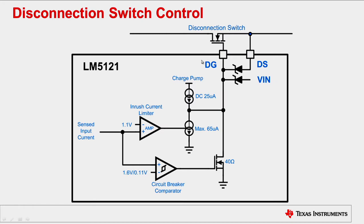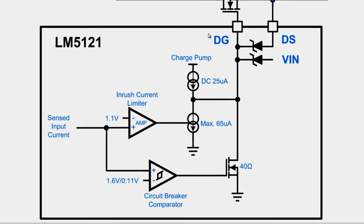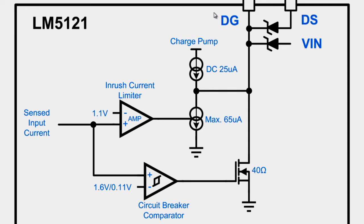Let's take a look at the inside. The disconnection switch controller has one amplifier and one comparator inside monitoring the sensed input current.